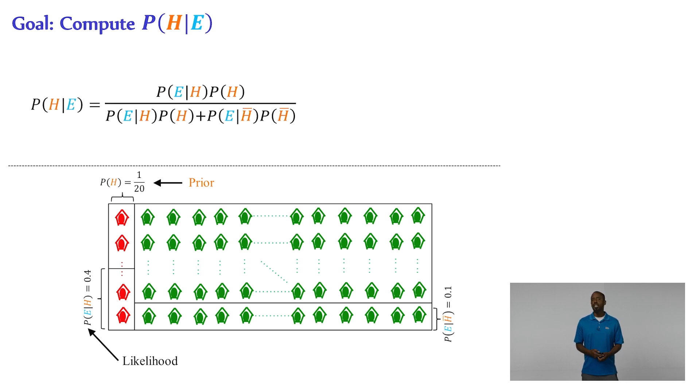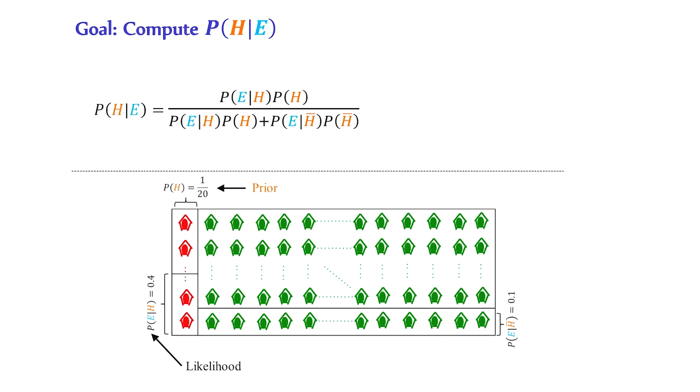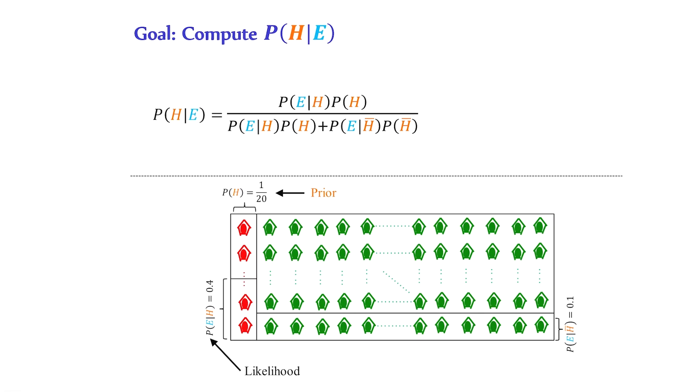Now there are a couple more things to note before we wrap this up. The first is the last piece of jargon in our formulation. The term on the left-hand side of the Bayes rule equation is described as the posterior.